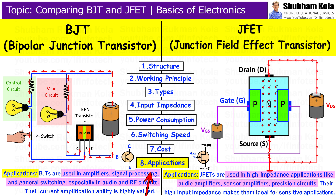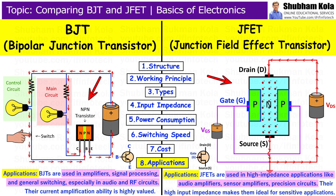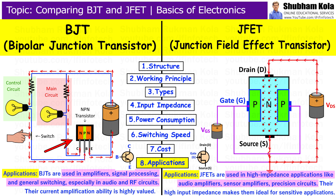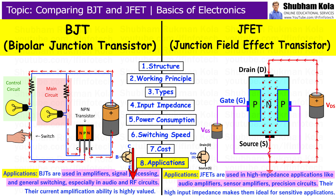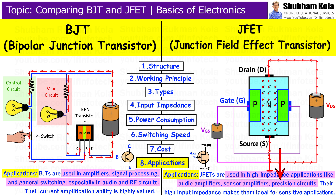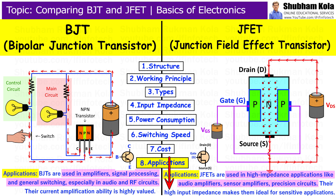Next is Applications. Let's look at the applications of BJT and JFETs. BJT is commonly used in amplifiers, signal processing applications, and switching applications. Its ability to amplify current makes it ideal for audio amplifiers, radio frequency amplifiers, and digital circuits. JFET is used in high impedance applications like audio amplifiers, sensor amplifiers, and precision circuits. Its high input impedance makes it suitable for sensor amplifiers and phono preamplifiers.